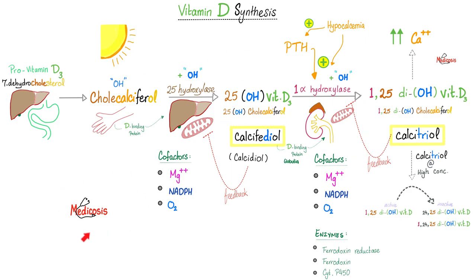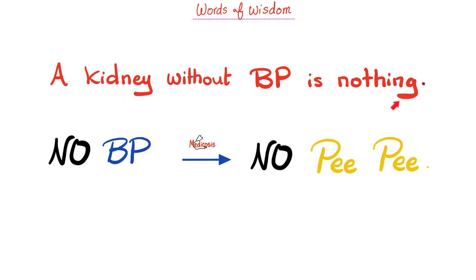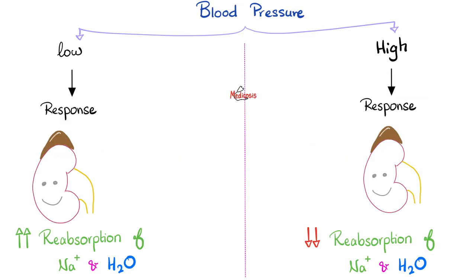A kidney without blood pressure is nothing. Put differently, no BP equals no PP. If there is no blood pressure, i.e., if I have hypotension, I will not be able to make any urine called oliguria, less urine, or anuria, no urine. This is kidney failure. The kidney without blood pressure is screwed. Therefore, the kidney has a vested interest in regulating your blood pressure. If your blood pressure is low, the kidney will respond. And if the blood pressure is high, the kidney will also respond.